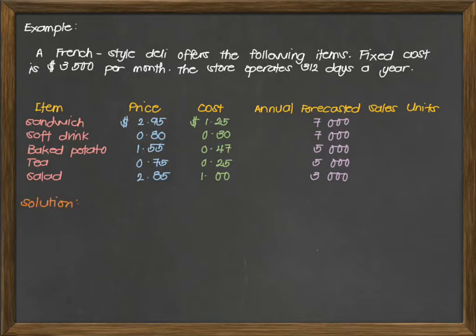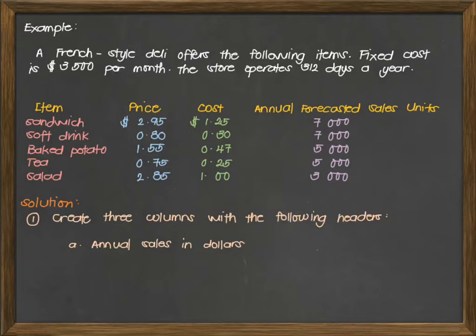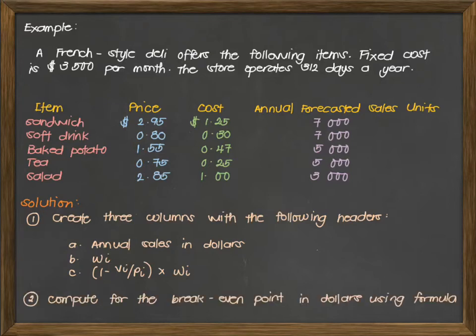So for our solution, the first thing that we need to do is to create three columns with the following header. This solution is of tabular type, for us to solve this problem easier. These columns should be: first is the annual sales in dollars. Take note that dollars can be in peso or in any kind of currency. Second is W sub I, or the percent at which of dollar sales. And then C is the 1 minus V over P, then multiplied by the W. Then for the second step, is to compute for the break-even point in dollars using the formula.